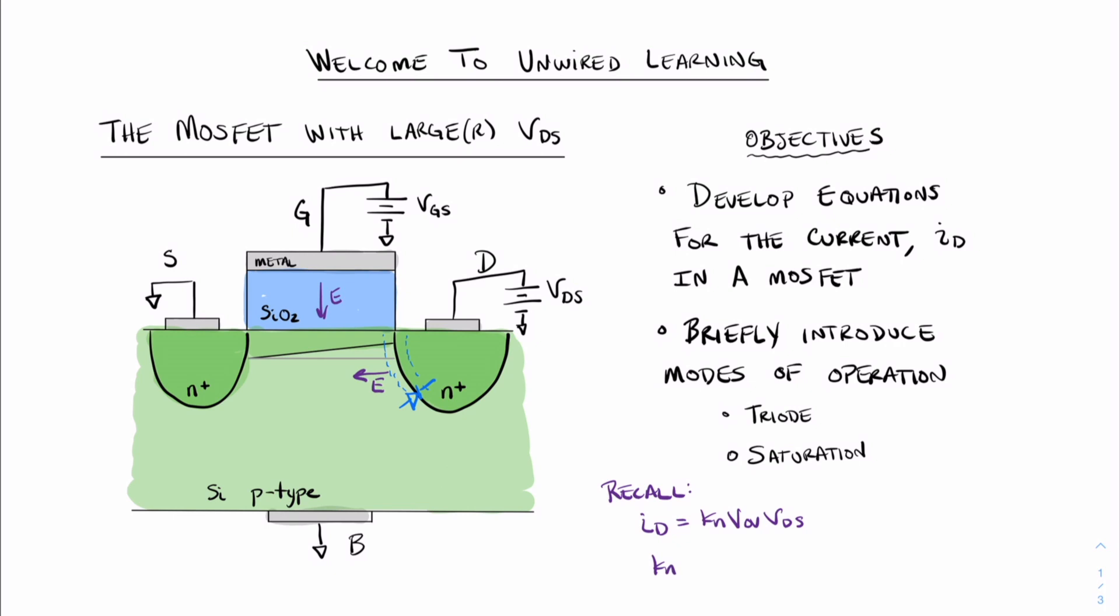Where KN is equal to mu n Cox width divided by length. And VOV, as you may recall, is the overvoltage, which is the value of VGS minus the threshold voltage. And this works if we think about the channel shape as being rectangular. But we're going to have to make a modification to this current equation, ID, now that we know that the channel shape is in fact more trapezoidal due to the larger value of VDS.